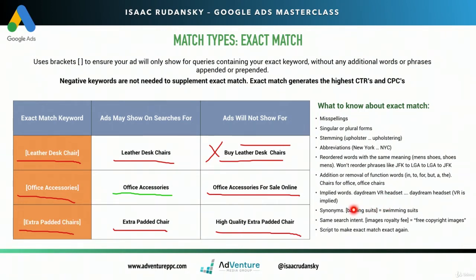Synonyms is a new one that Google is now showing exact match keywords for. If your exact match keyword is 'bathing suits,' Google might trigger that keyword if somebody searches for 'swimming suits' because swimming and bathing are considered synonyms by Google. Google doesn't publish a list of synonyms, but you'll get a sense of what they are by monitoring the search terms report.